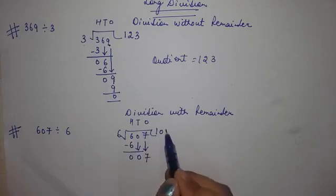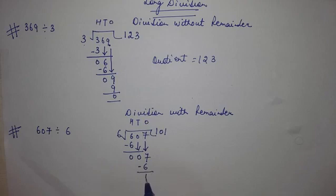So 6 once is 6. 7 minus 6 equals to 1. This is a division with remainder. So we will be stopping our division here only. We get the remainder 1.